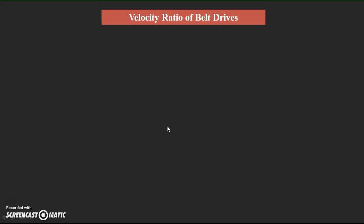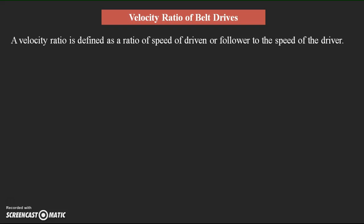What is the definition we can give for the velocity ratio? The velocity ratio is the ratio of speed of the driven or follower to the speed of the driver. So the velocity ratio is equal to speed of follower divided by the speed of driver.